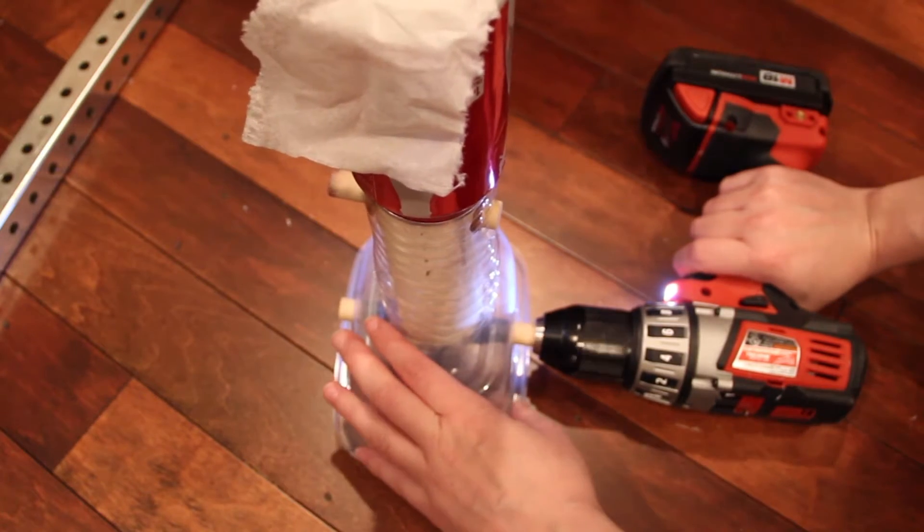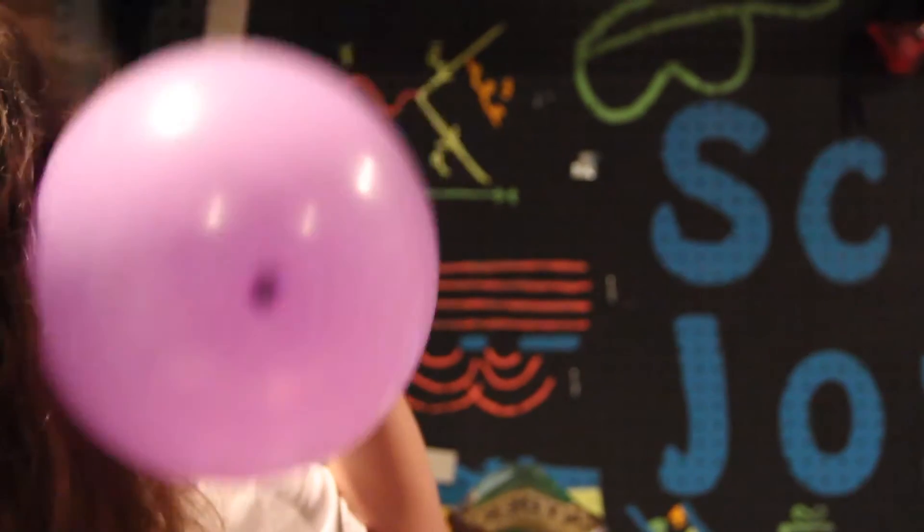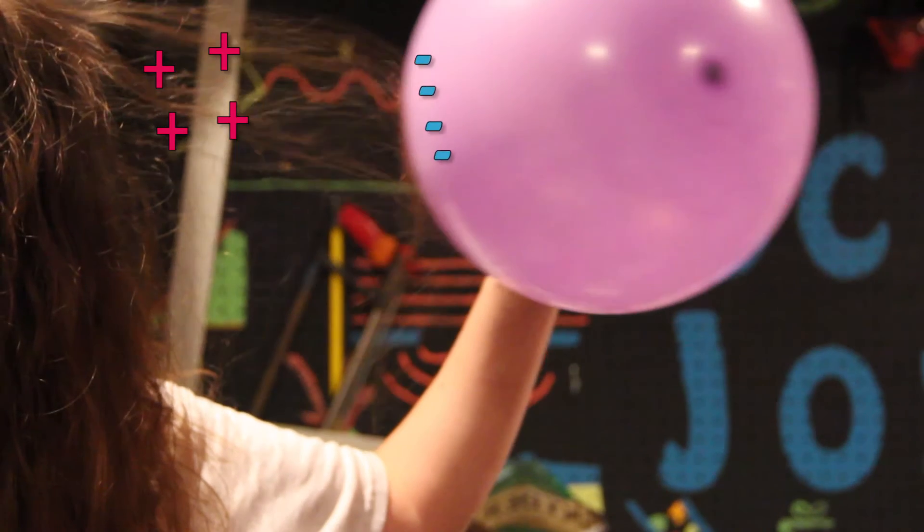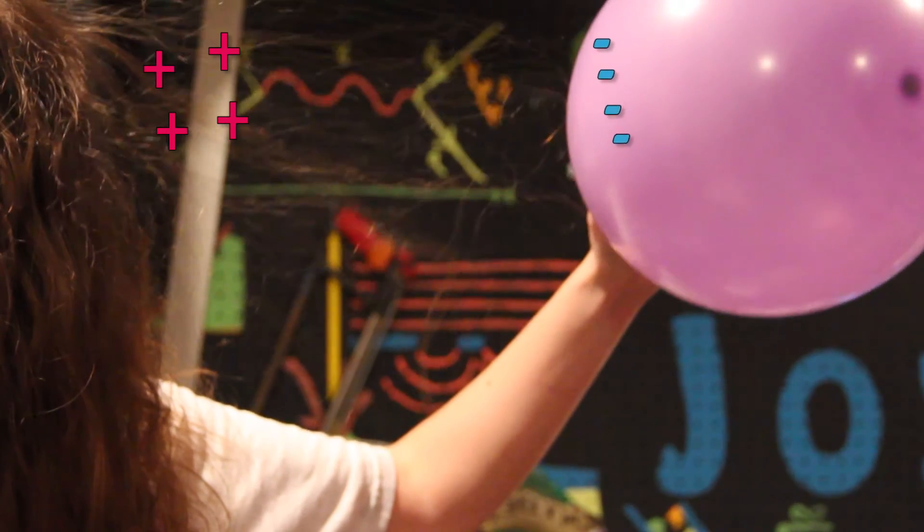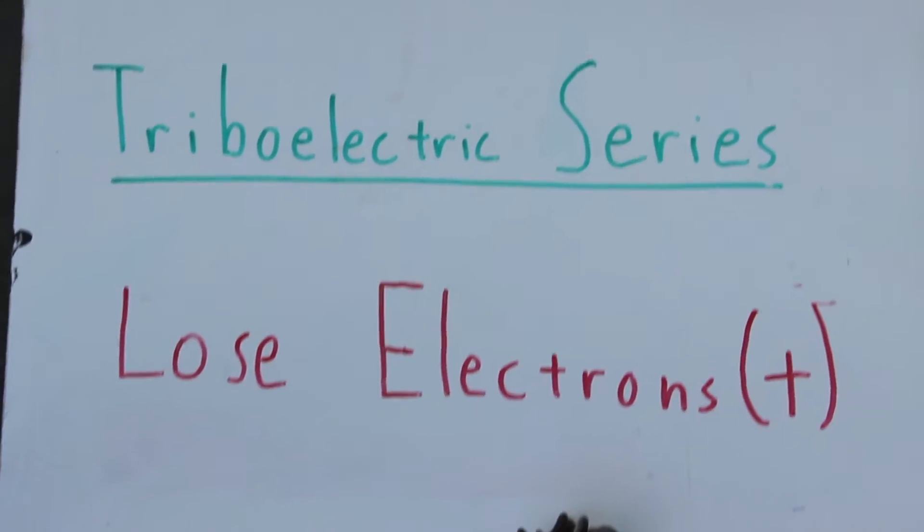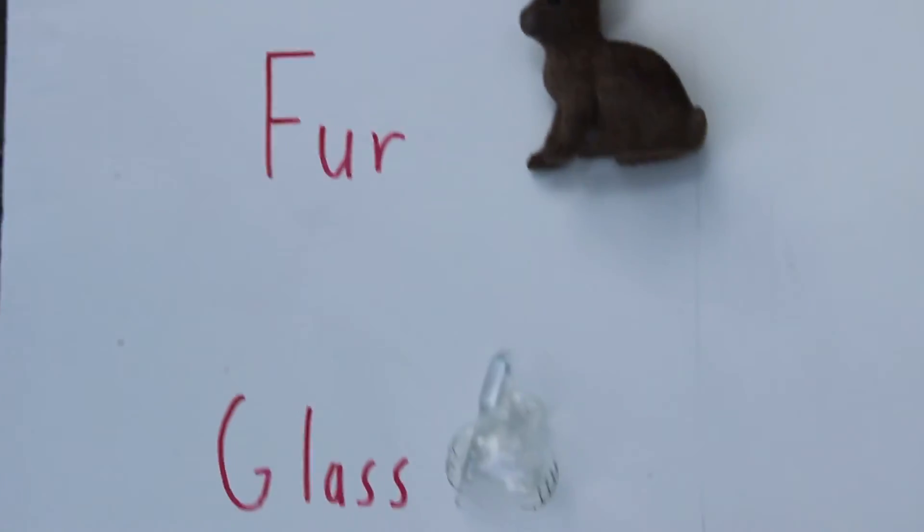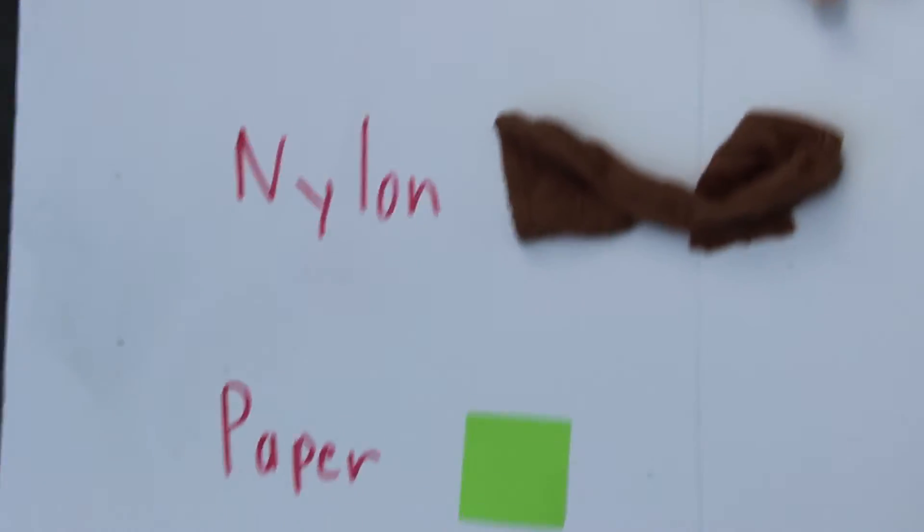Static electricity is created when two materials rub together and one gives up electrons and becomes positively charged, while the other gains electrons and becomes negatively charged. Materials most likely to give up electrons like hair are at the top of the series, while materials most likely to gain electrons like latex are at the bottom.